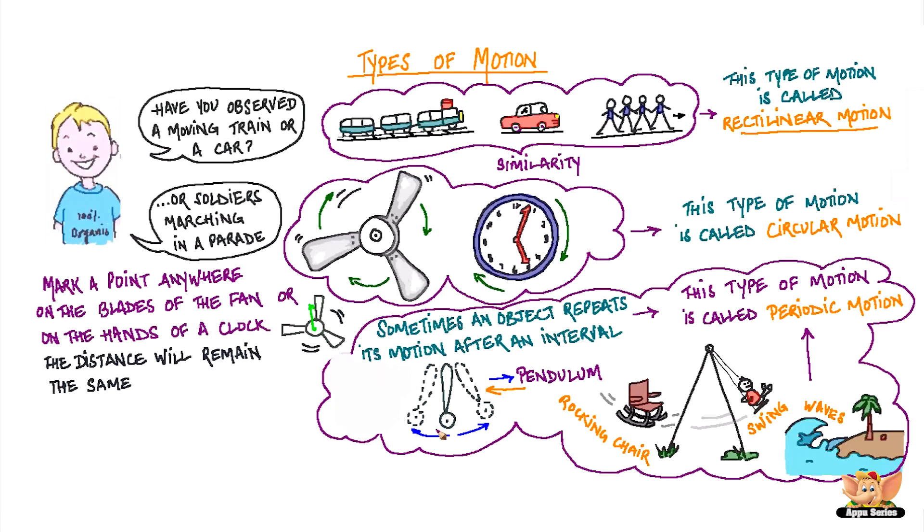Sometimes objects can do multiple motions while moving. Take a ball and roll it towards your friend standing at the other end of the room. What kind of motion do you think the ball would make? It rotates making a rotary motion and moves in a line making a rectilinear motion.